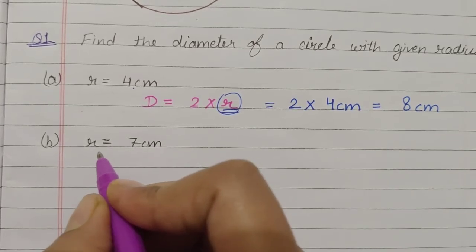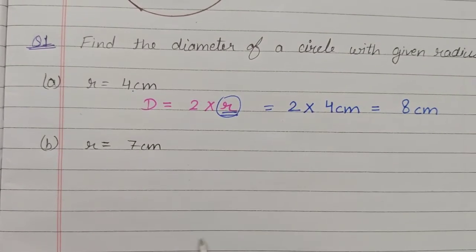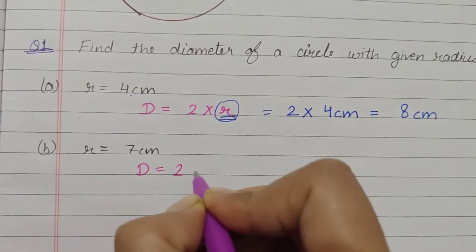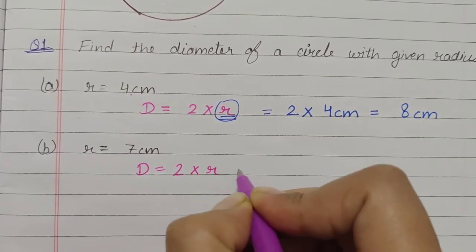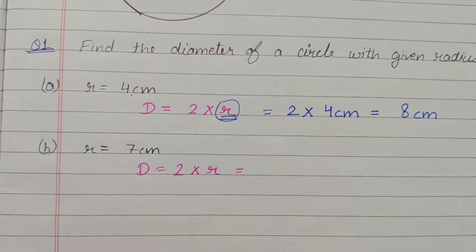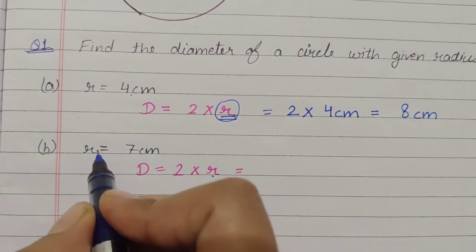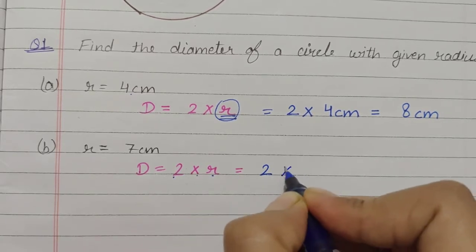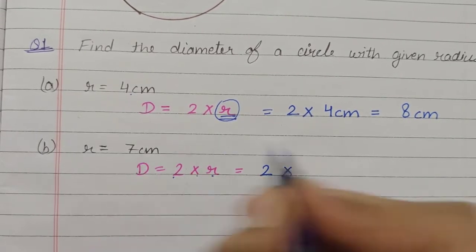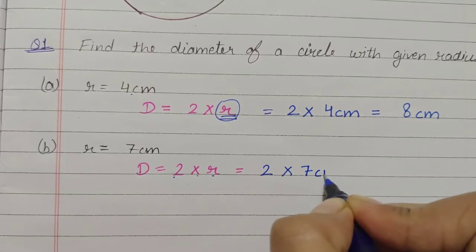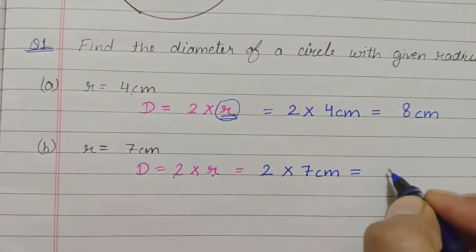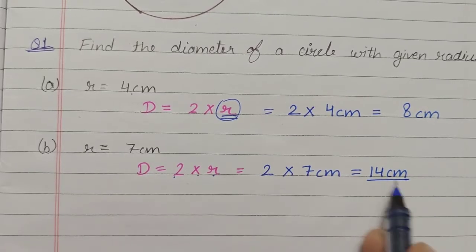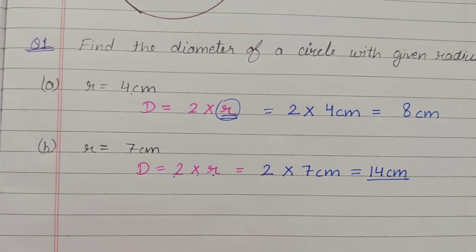One more example: radius is equal to seven centimeter. Again we will write the formula — D is equal to two times of r — and now we will put the value of r, which is seven centimeter. Two multiplied by seven gives us fourteen centimeter. So, the diameter is fourteen centimeter.